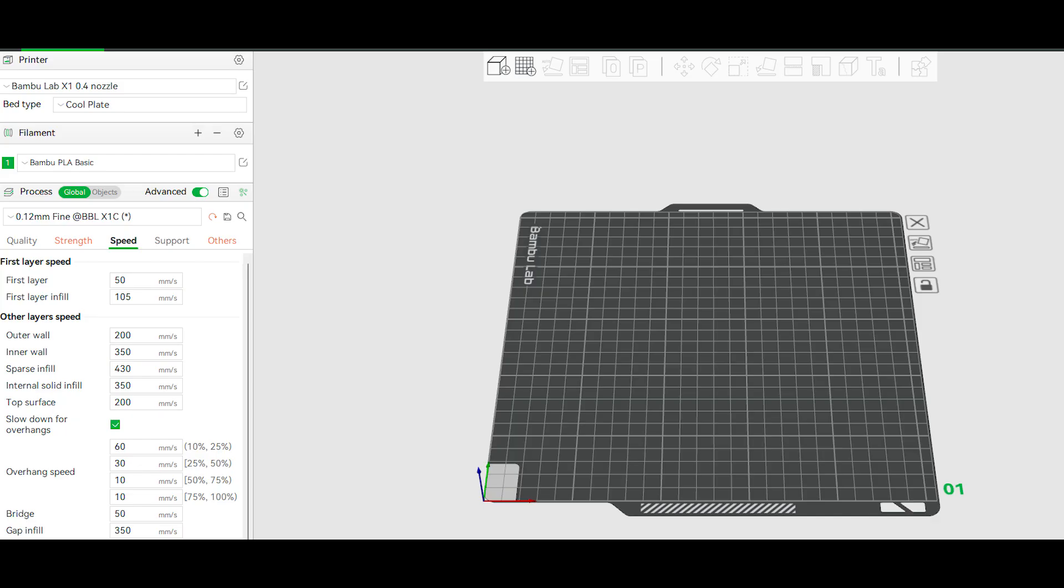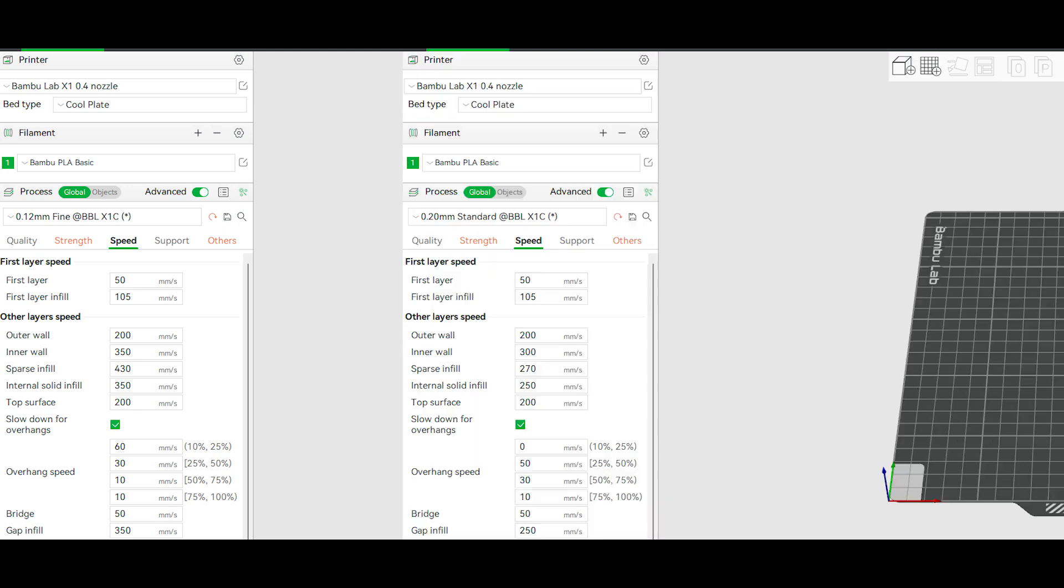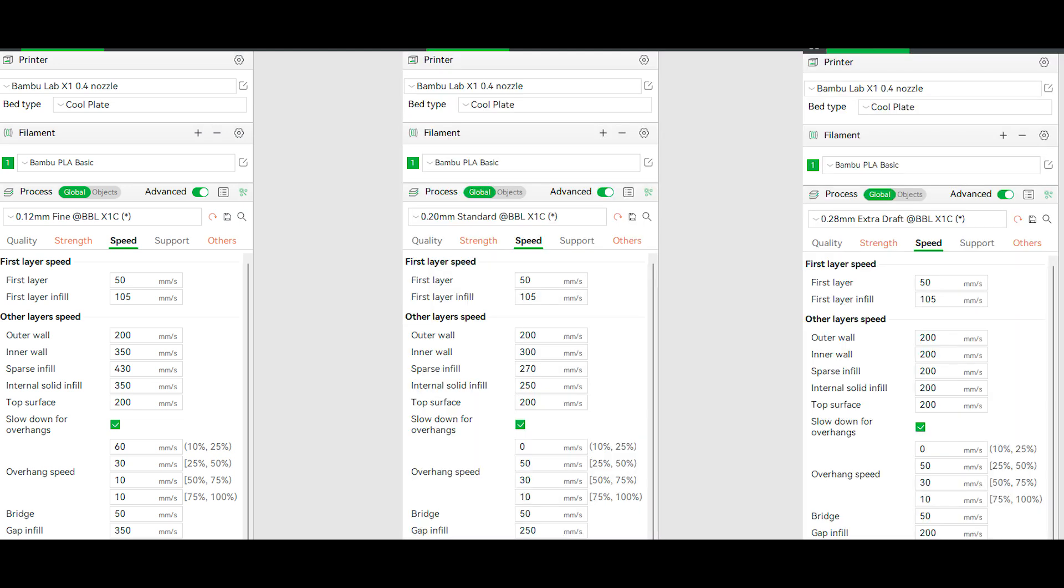Secondly, let's look at their slice parameters. The X1 sets slice parameters for different layer heights. The print speed parameters for 0.12 millimeters, 0.2 millimeters, and 0.28 millimeters layer height are as follows. It can be seen that the 0.12 millimeter layer height has the fastest printing speed. This is due to the smaller layer height having a faster speed for a given nozzle flow rate. The print speed for 0.2 millimeter layer height is significantly slower and is limited by the nozzle flow.